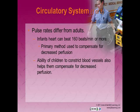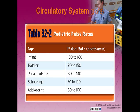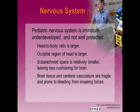For the circulatory system, pulse rates differ from adults just as respiratory rates do. An infant's heart rate can be 160 or more per minute. This is the primary method the body uses to compensate for decreased perfusion. The ability of children to constrict their blood vessels also helps compensate for decreased perfusion. Signs of vasoconstriction include weak distal pulses, delayed capillary refill, and cool hands or feet. Pediatric patients are more dependent on cardiac output — the formula is stroke volume times heart rate. Pediatric patients may be in shock despite normal blood pressure, and it may take only a small amount of blood loss for them to go into shock.